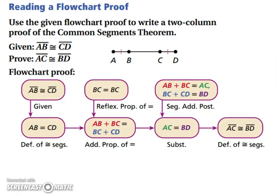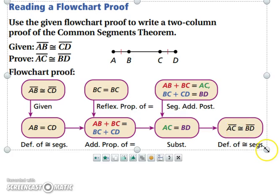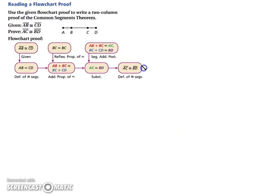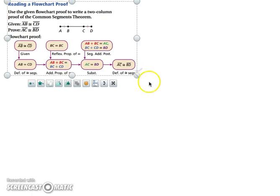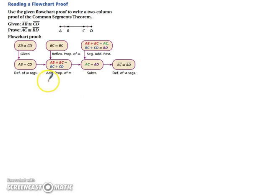Let's look at a proof for the Common Segments Theorem. Use the given flowchart proof to write a two-column proof. I'm going to shrink this up a little bit just so that we can have some space to actually write this two-column proof. We have ourselves a two-column proof, which means we need our statements and our reasons.